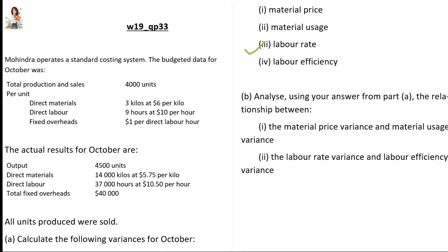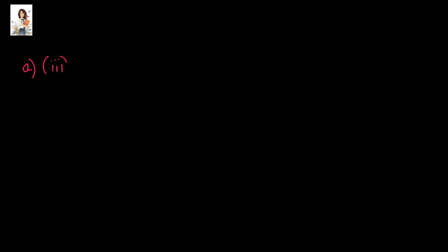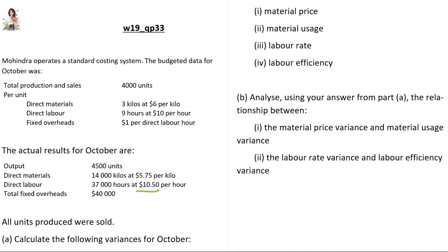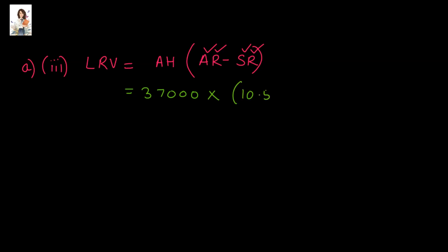In part A3, we calculate the labor rate variance. The formula is: actual labor hours multiplied by (actual wage rate minus standard wage rate). Actual labor hours are 37,000. Actual wage rate is $10.50 and standard wage rate is $10.00. So we write: 37,000 × (10.50 − 10.00). On solving this, we get $18,500. Since the actual wage rate is greater than the standard wage rate, the result is adverse — denoted by the letter A.